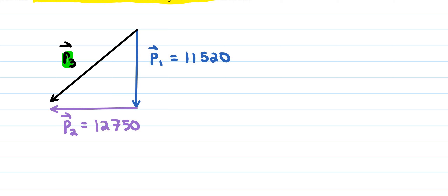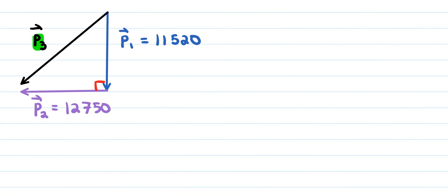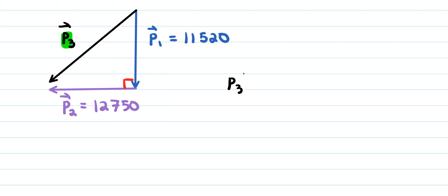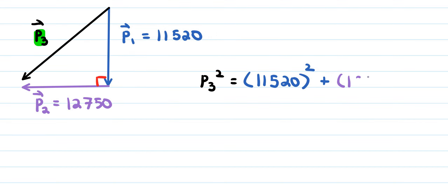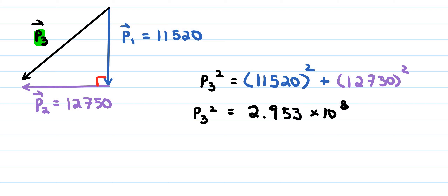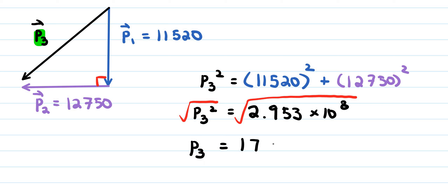To find the magnitude of the combined momentum P3, we use the Pythagorean theorem: P3² equals 11,520² plus 12,750². That equals approximately 2.953 times 10 to the power of 8. Taking the square root of both sides gives us the magnitude of the third momentum: 17,183.51 kilogram·meters per second.